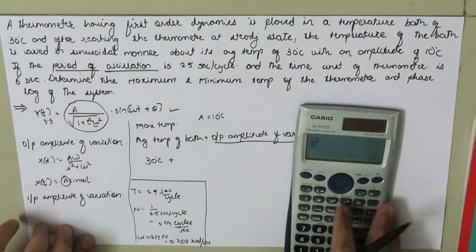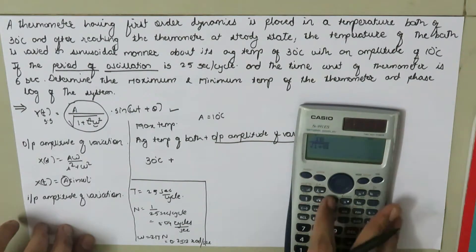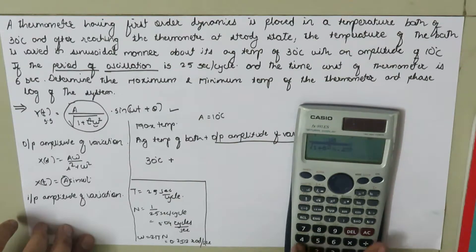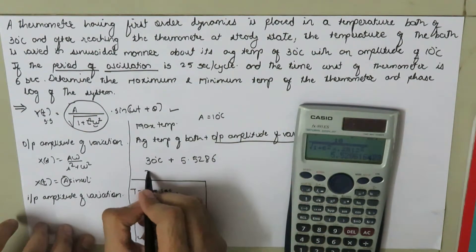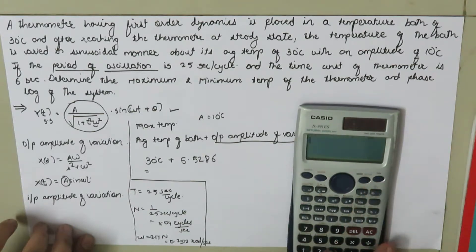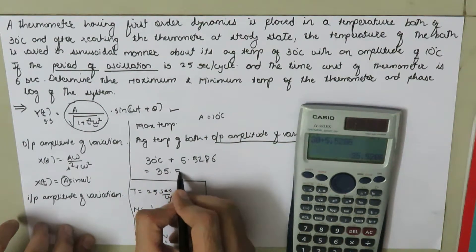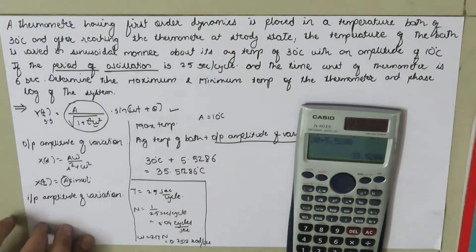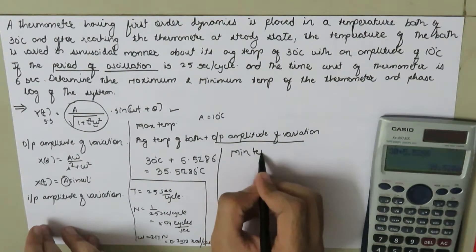From this, we calculate the output amplitude of variation: 10 divided by the square root of (1 plus tau squared times omega squared), where tau is 6 seconds and omega is 0.2512 radians per second. This gives 10 divided by the square root of (1 plus 36 times 0.2512 squared), which equals 5.5286. Therefore, the maximum temperature is 30 plus 5.5286, giving a maximum temperature of 35.5286 degrees Celsius.